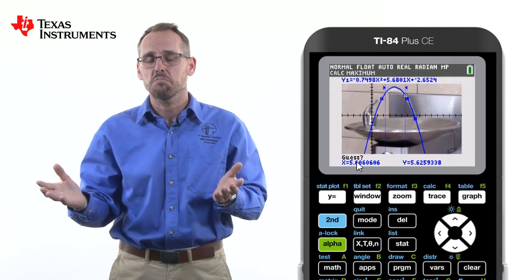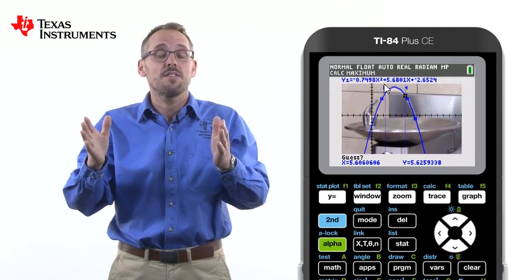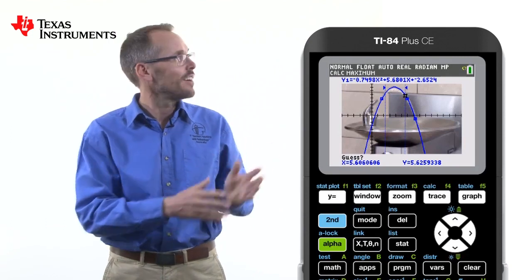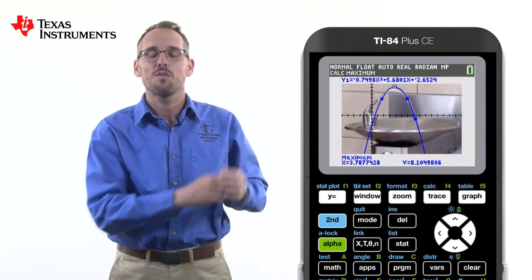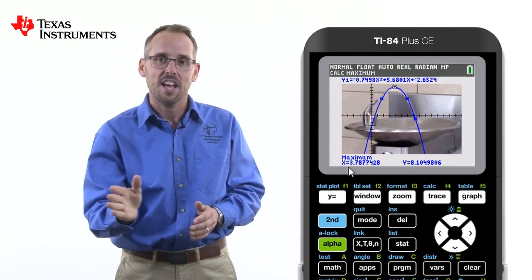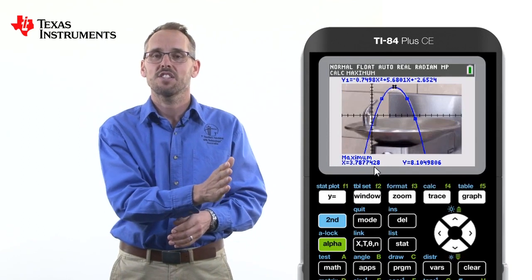It now asks us to guess. Well, between those two points, there's only one maximum. So now press enter again. And how about that? We now have the maximum value that the water spout reaches and the corresponding x value when this occurs.